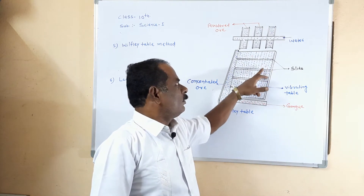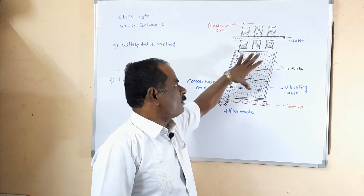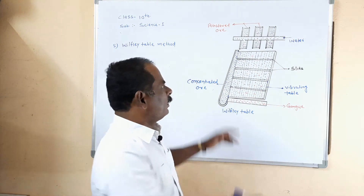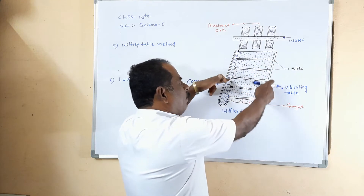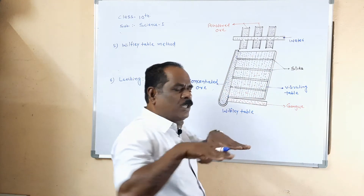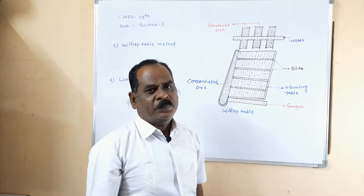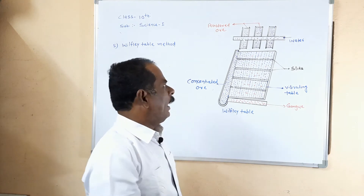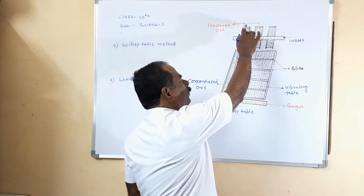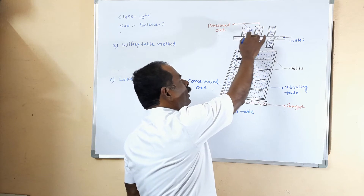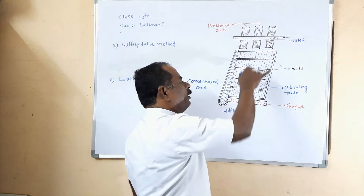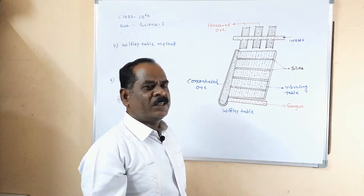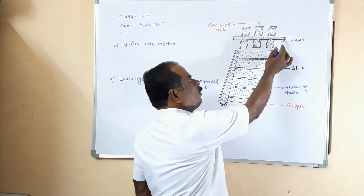These wooden riffles are fixed in inclined positions and the table is kept continuously in a vibrating position. First, make a powder of the ore and pour the ore powder on the upper surface of the vibrating Wilfley table and simultaneously pass a stream of water.